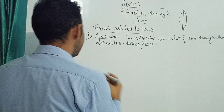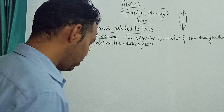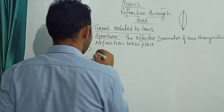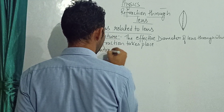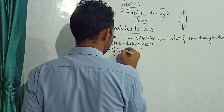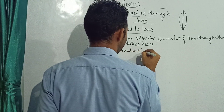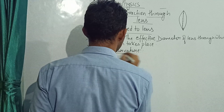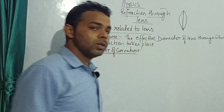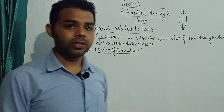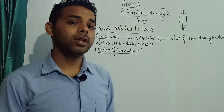The second term is centre of curvature. What is the centre of curvature? We have studied this in mirrors also. The centre of curvature is the centre of the sphere of which the mirror or lens is a part.